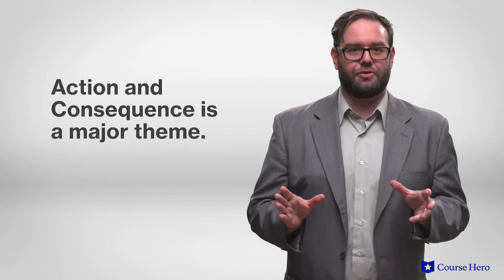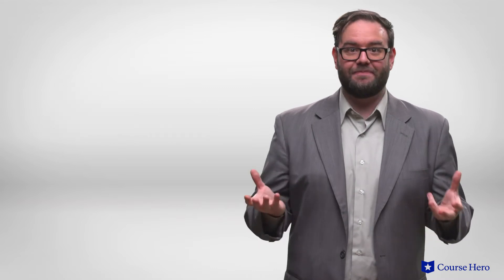Action and consequence is a major theme in The Outsiders. Every action, every decision, has consequences, whether those consequences are intended or accidental. For example, when Ponyboy and Johnny flee the scene of Bob's murder, Ponyboy does not think at all about the possibility of being split apart from his brothers as a consequence.